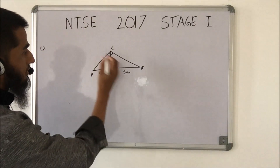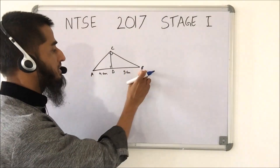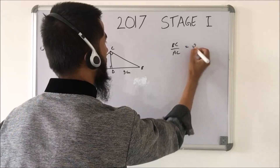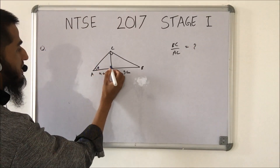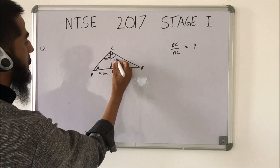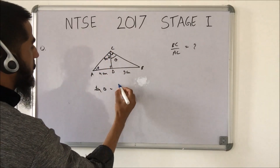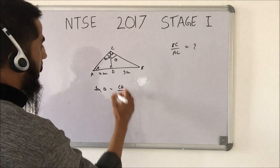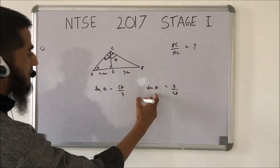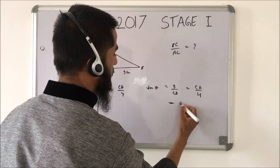A triangle right-angled at C is given where CD is perpendicular to AB, AD = 4 cm, and DB = 9 cm. We need to find the ratio BC to AC. If angle A = θ, then in triangle ACD, tan θ = CD/4, and in triangle BCD, tan θ = 9/CD. Setting these equal: CD/4 = 9/CD, so CD² = 36, giving CD = 6.